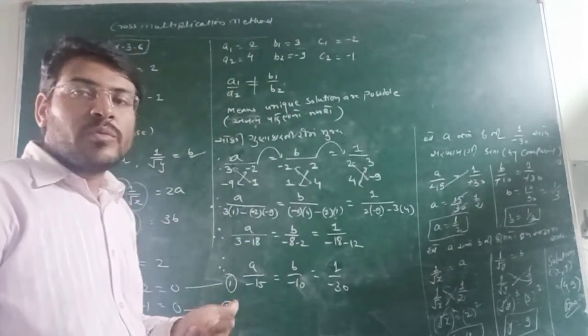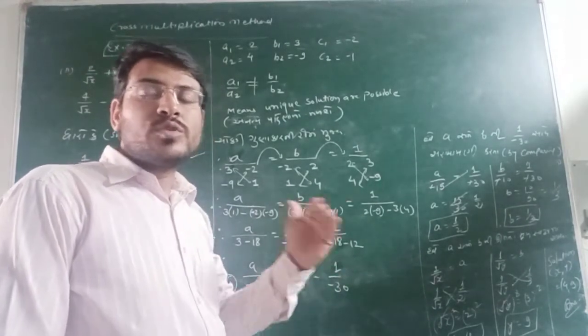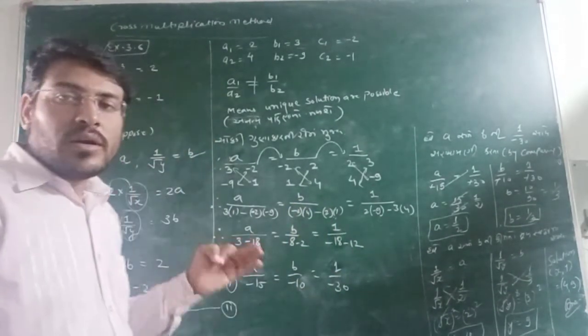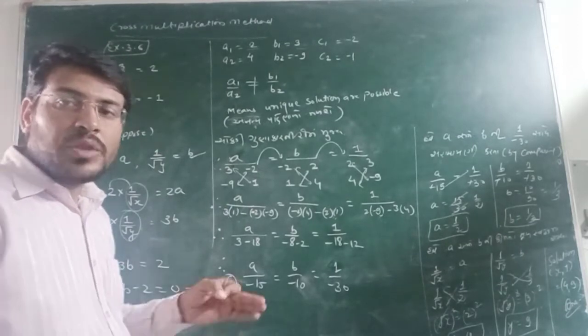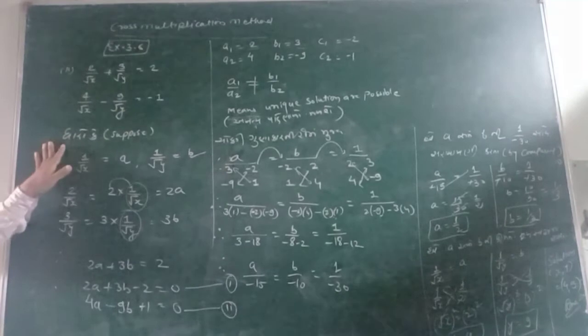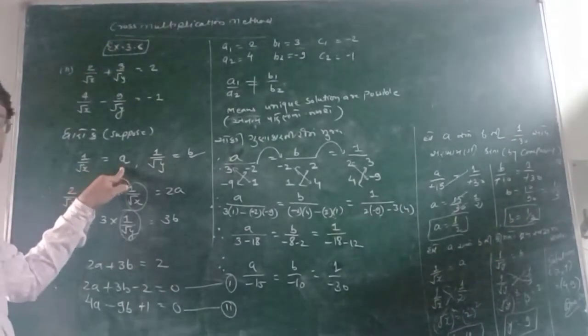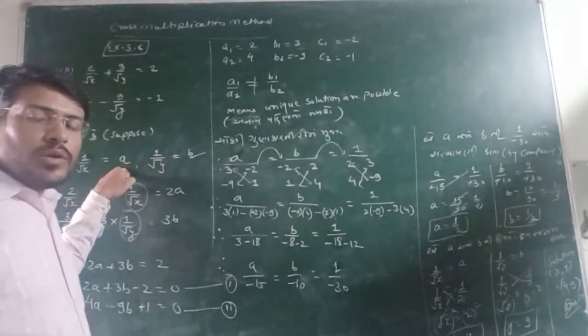For making equations, we have to convert those values, those variables which are given in the denominator side. Let's see. Suppose, 1 upon root x is equal to a. We have to assume as any variable you want,